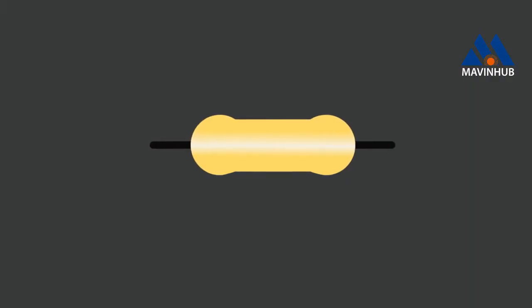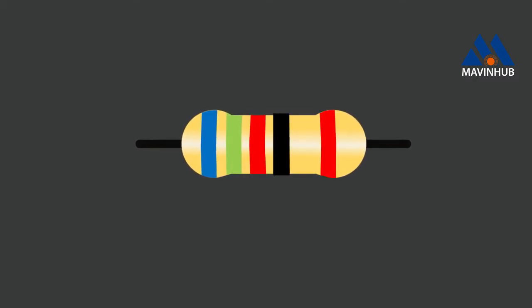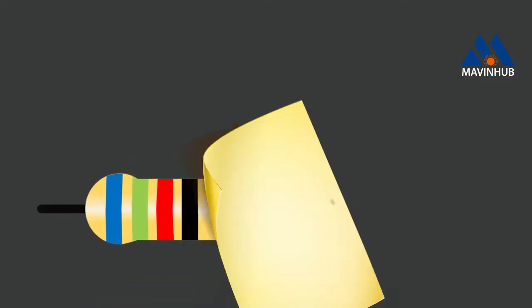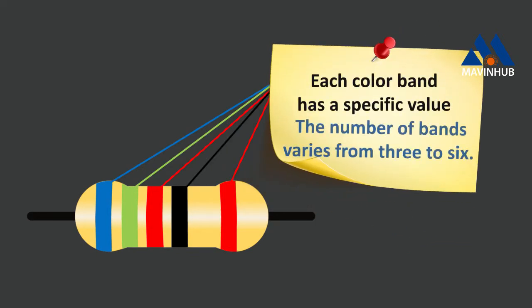Resistor values are often indicated with color codes. The color code is given by several bands, and each color band has a specific value. The number of bands varies from 3 to 6.